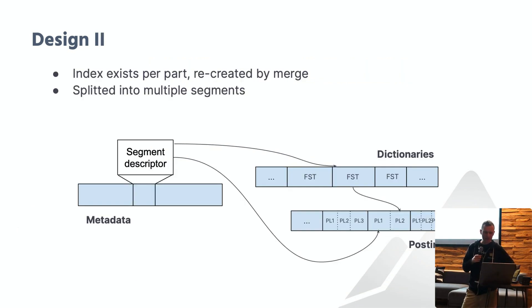Similar to the other secondary indexes, the inverted index exists per part and the merge of two parts also recreates the index. I will also say that the inverted index can get fairly big, either the posting list or the dictionary, depending on the statistical distribution of the tokens. For that reason, we wanted to avoid a situation where the entire index has to be loaded into memory. We achieved that by splitting the index into multiple segments. Of course, you'll be able to configure the segment size. By doing so, only pieces of the index are loaded into memory at a time. You can think of a segment as a self-contained index which covers a subset of the rows in the part. Every row in the part is eventually covered by an inverted index segment.